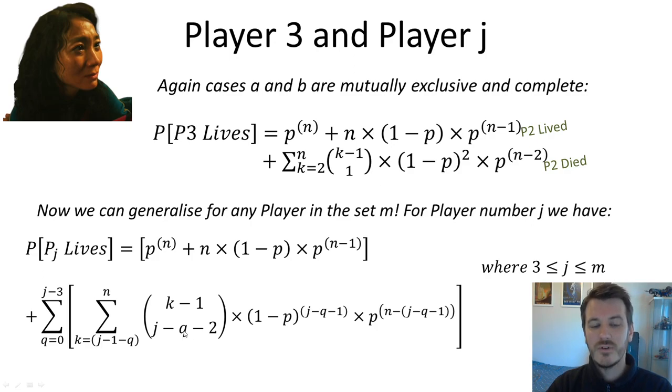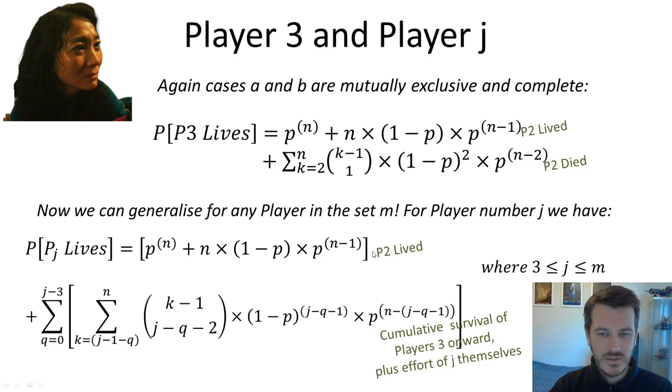So this formula here is exactly the same as this stuff in the brackets with Q equal to 0. If you imagine Q is equal to 0 for a moment, you'll see that, and J is equal to 3, you'll see that this is just K-1 and this thing down the bottom is a 1. And so, just to label that, this is the scenario where player 2 lived and this is the cumulative survival of player 3 onward plus the effort of J themselves.